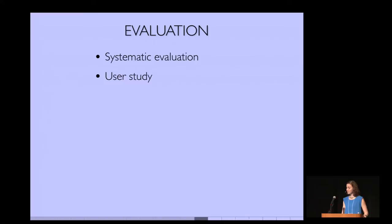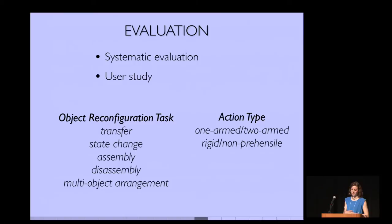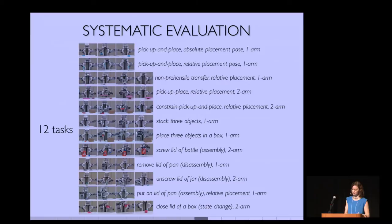And as we go you're starting to see some of the different actions. So that's how the system works. Now let me tell you a little bit about how we evaluated it. We did this in two ways. We had a systematic evaluation to sort of demonstrate the expressivity of the different things you could do. And we did a user study to sort of validate that people could actually use the system to program new actions. As I said, the focus was on object reconfiguration tasks. So we wanted to demonstrate different types of object reconfiguration tasks being programmed this way with our system. And this includes transferring, so transposing objects, changing their states, assembling and disassembling two objects, and other multi-object arrangement tasks.